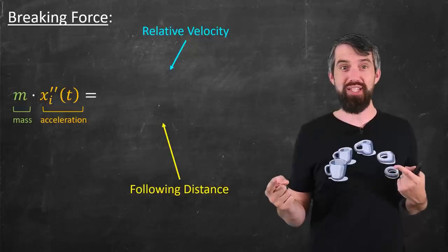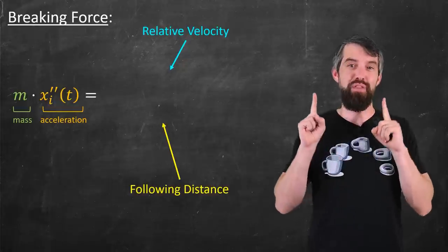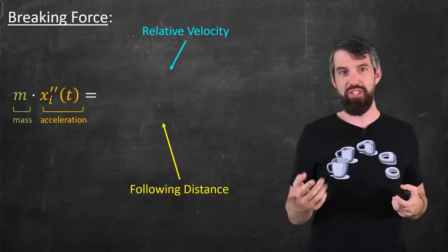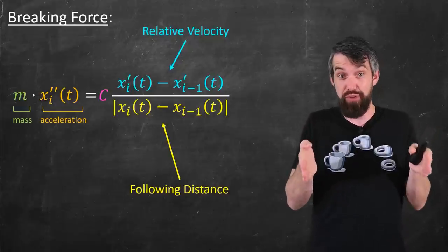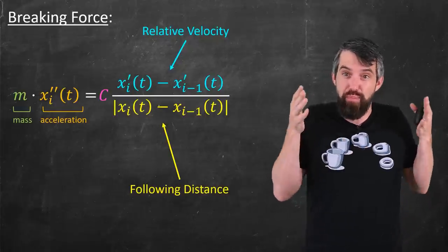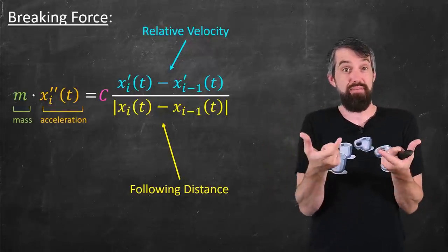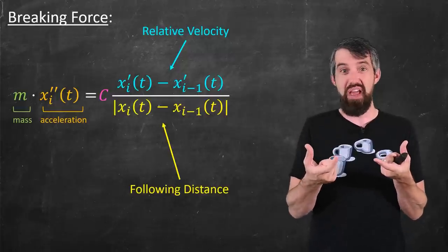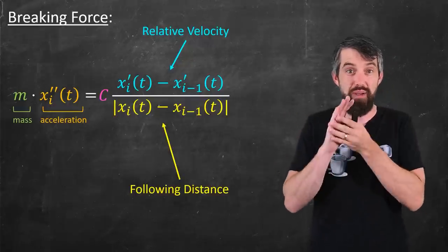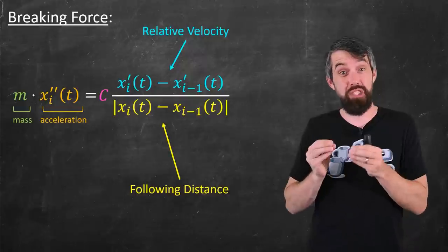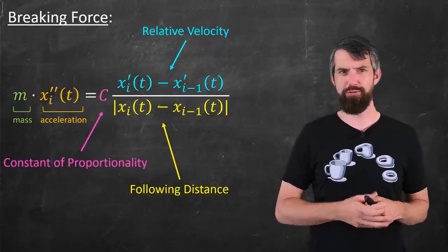I'll note two things. First is, the larger the relative velocity, the bigger that acceleration is going to be. And similarly, the smaller the following distance, the bigger the acceleration is going to be. And so what about this as a formula? On the top, I have the difference between the velocities, in other words, the relative velocities. So I'm saying my braking force is proportional to the relative velocities. And in the denominator, I've put the following distance, that difference between the positions of the two cars. This is meaning that my braking force is inversely proportional to the following distance. Out the front, I have some constant of proportionality, c, because I don't know what that is going to be.